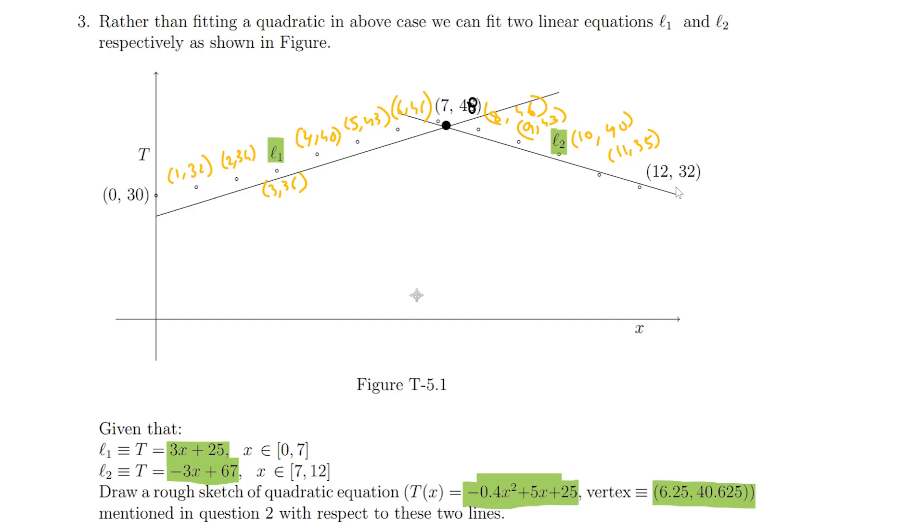These are our points and for us to do the rough sketch, the vertex is at 6.25.